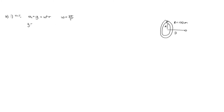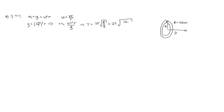So g equals (2 pi over T) squared times R. This tells us that T squared equals 4 pi squared R over g. So the period is equal to 2 pi times the square root of R over g — where R is the radius of the disk, so capital R. Substituting in, we've got 2 pi times the square root of 100 over 9.8, which is approximately 10. Solving on the calculator, we end up with 20 seconds.